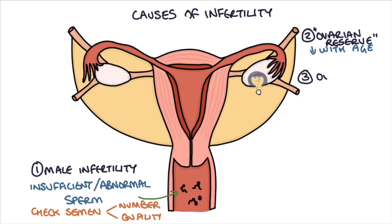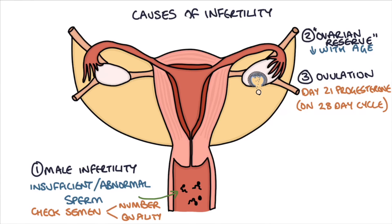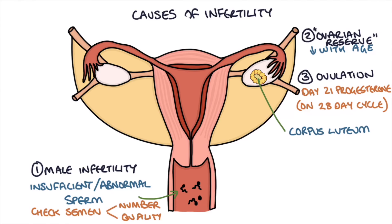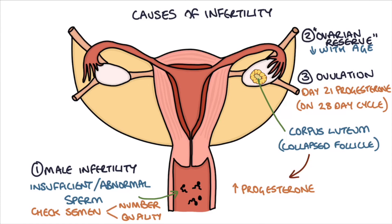Next we need to check whether she's actually ovulating and releasing eggs each month. We do this using a day 21 progesterone test — though this timing is appropriate for a 28-day cycle. We want to check progesterone 7 days after ovulation, so we take the cycle length and count back 7 days from the expected period onset. For a 27-day cycle that's day 21; for a 32-day cycle it's day 25. Progesterone is secreted by the corpus luteum after ovulation, so a rise in progesterone confirms ovulation has occurred.